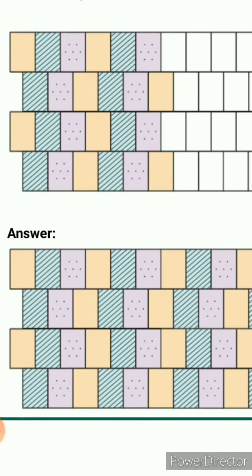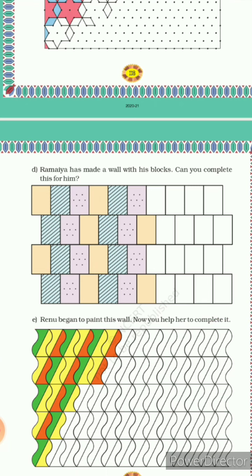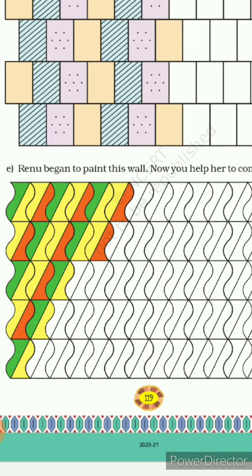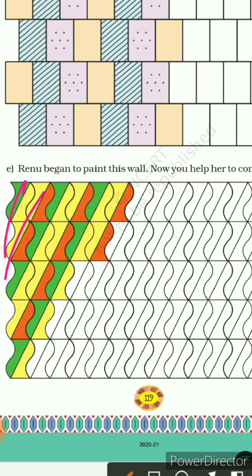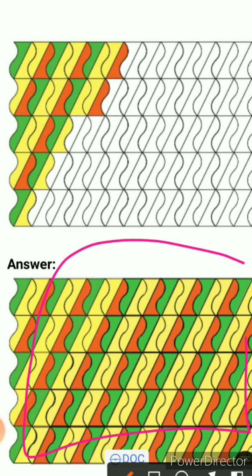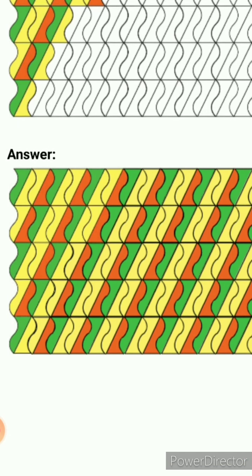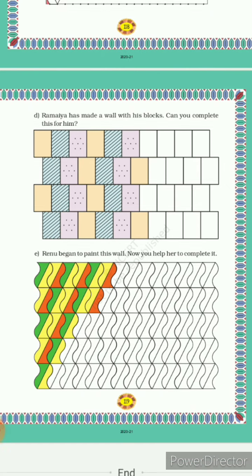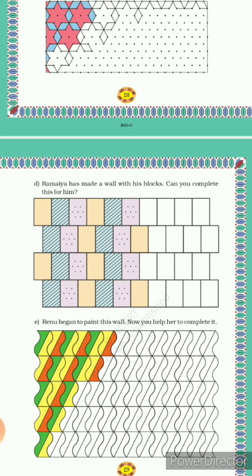Reno began to paint her wall and now you help her to complete it. Unhone kya kiya hai: first shade is green, then yellow, then orange, then green, then yellow, then orange — this tarike se color kiya hai. Auri poori wall ko isi tarike se complete karna hai. Jab Reno apni wall ko poora color kar lengi, to aapki wall kuch aise lagegi.